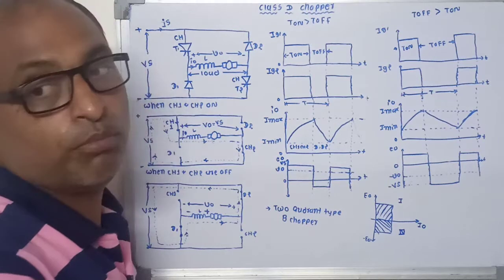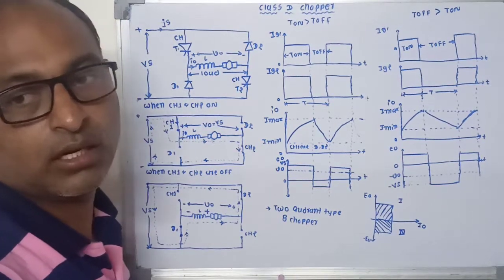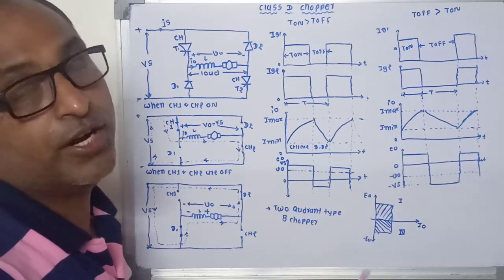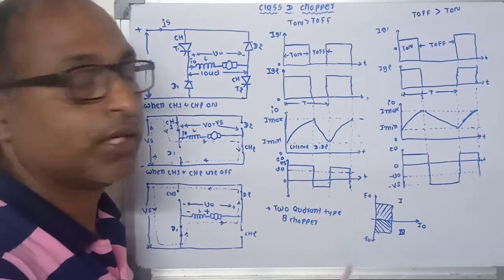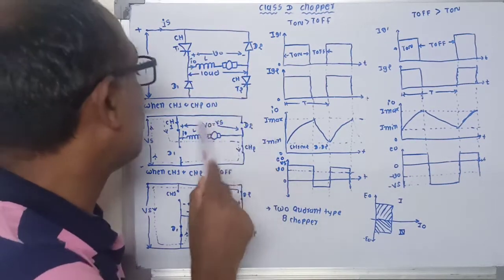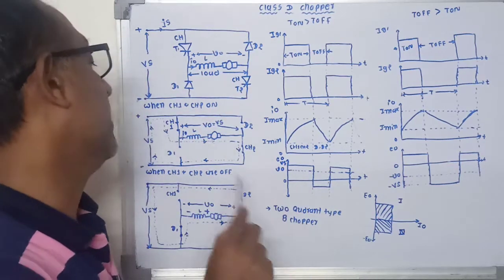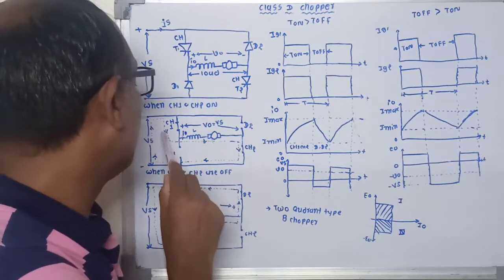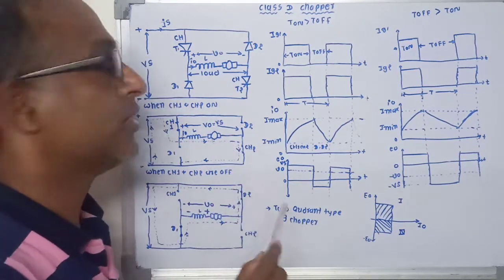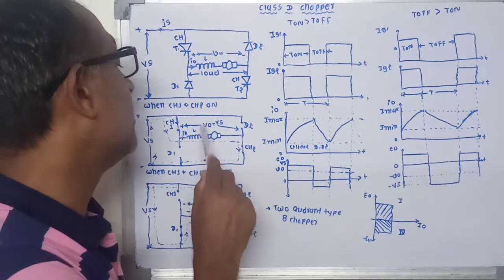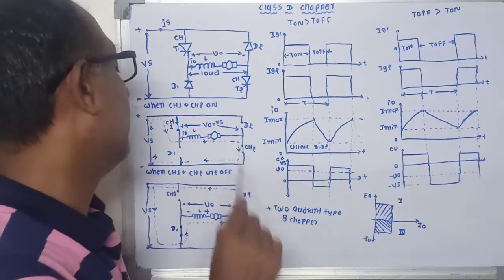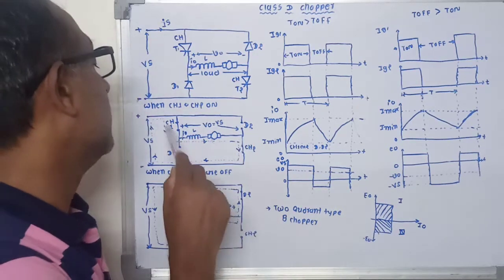A necessary condition for this chopper is that the load should be inductive. When choppers CH1 and CH2 are both ON simultaneously, the input voltage VS appears across the load, meaning the output voltage V0 is equal to VS. This terminal is positive and the other is negative.